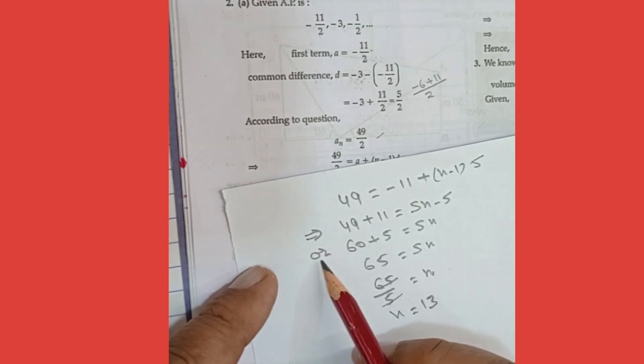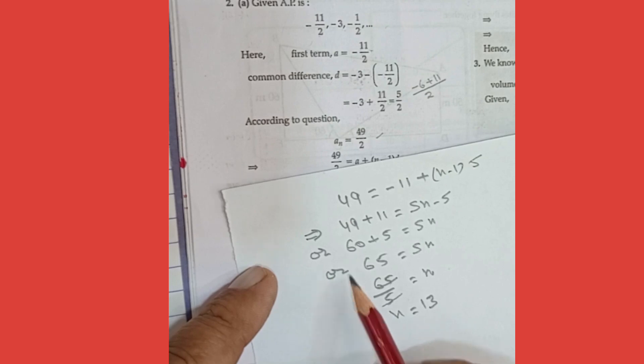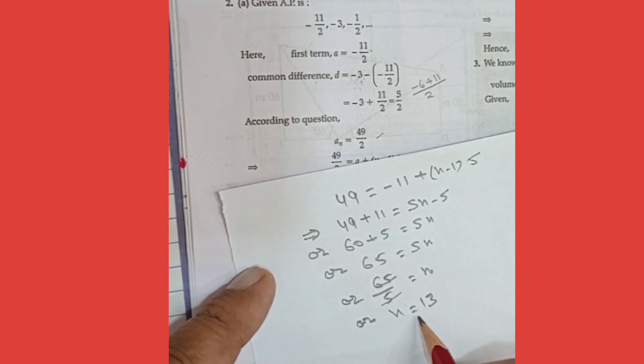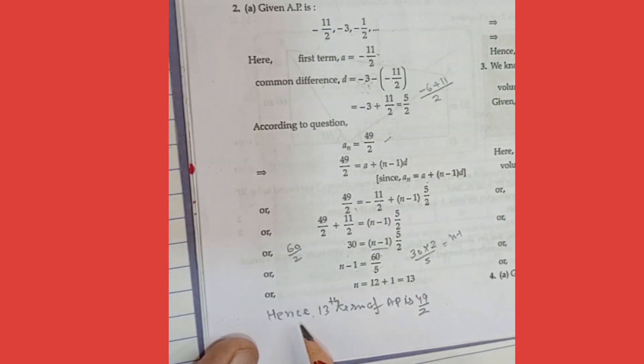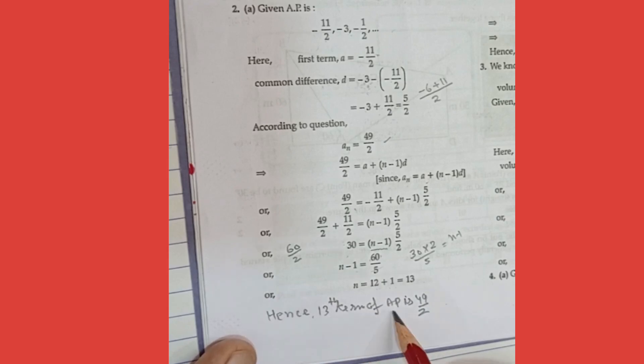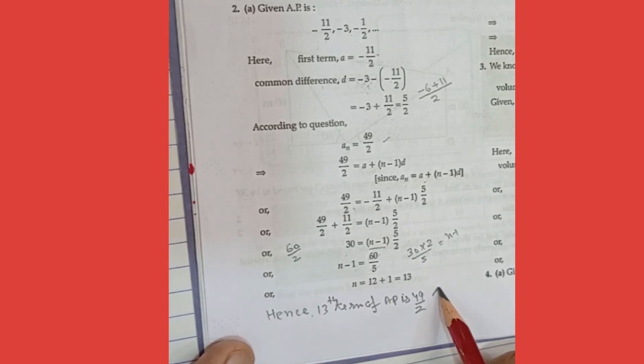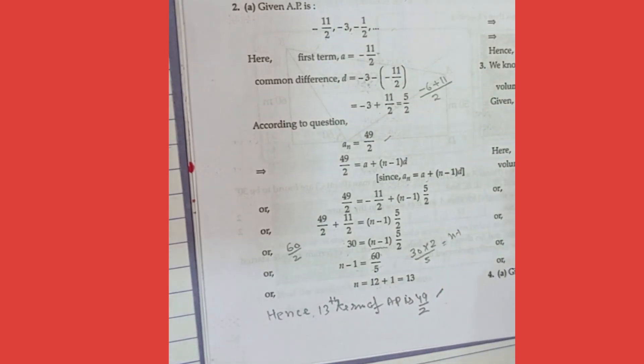One more thing you have to note down here, either you put this indication or you have to write over here, out of these two anyone you have to write. So N is equal to 13 is your answer, so we can tell that hence 13th term of AP is 49 upon 2. That's all, I think you understand better.